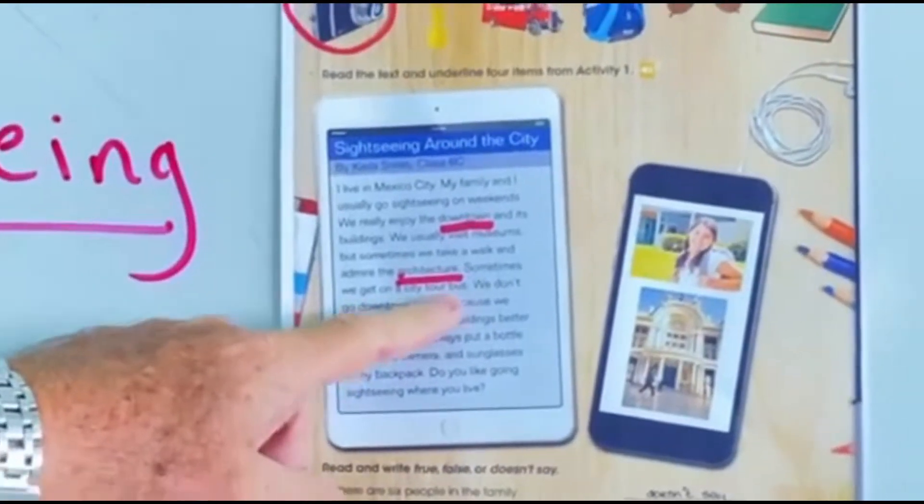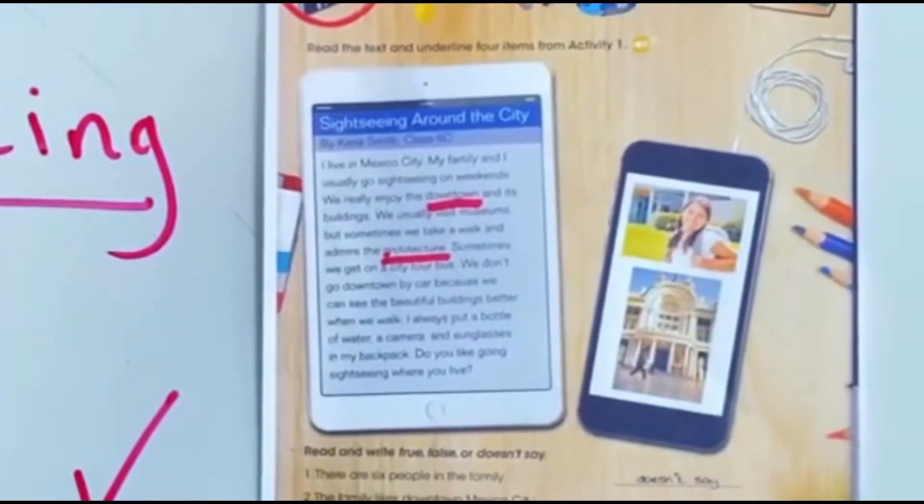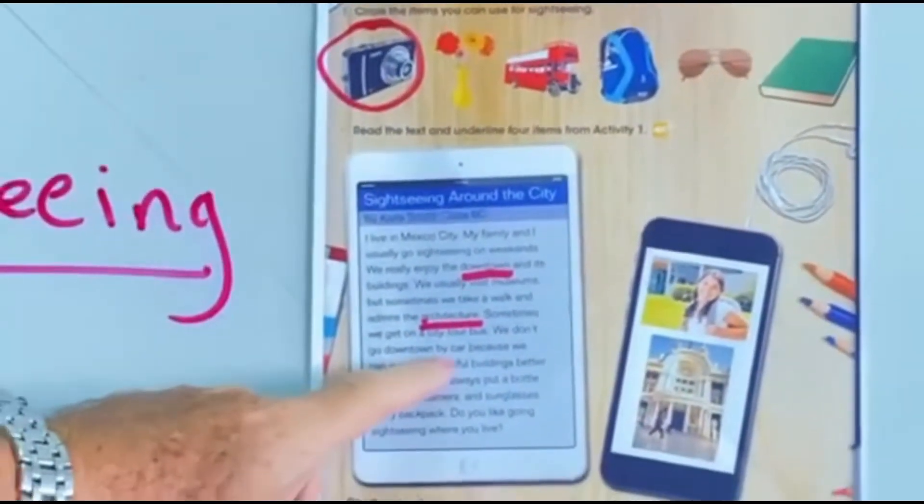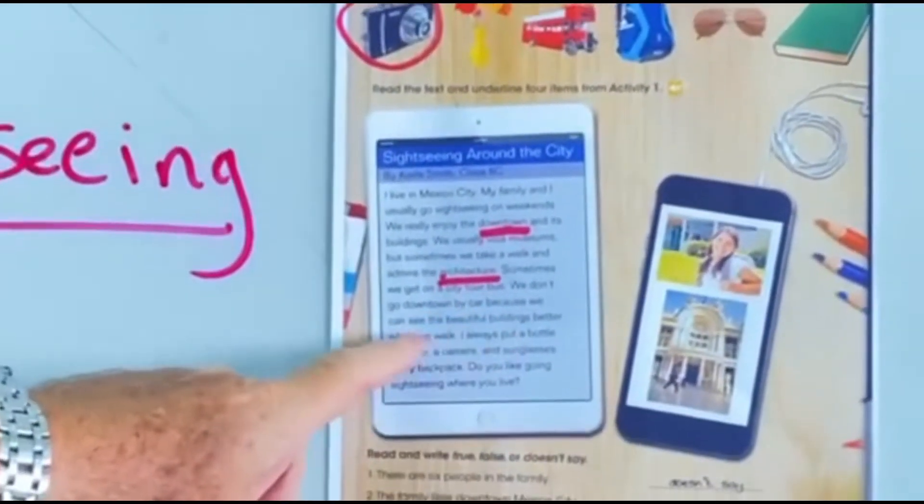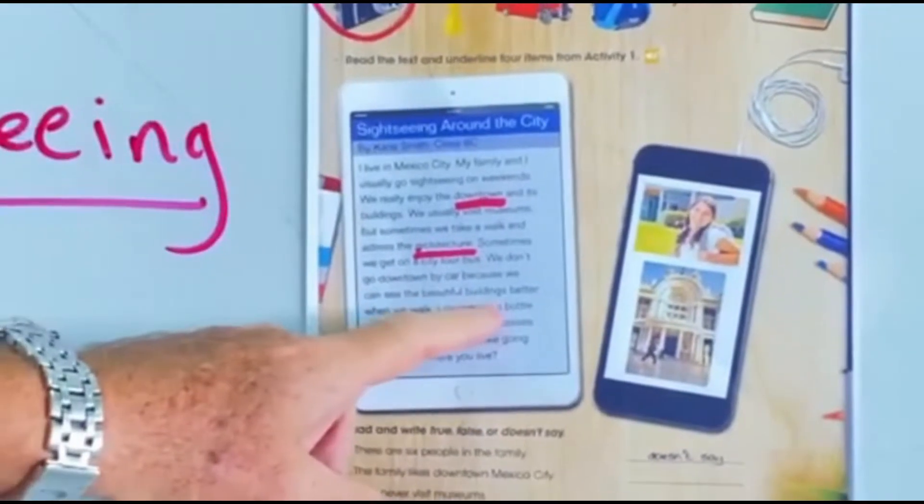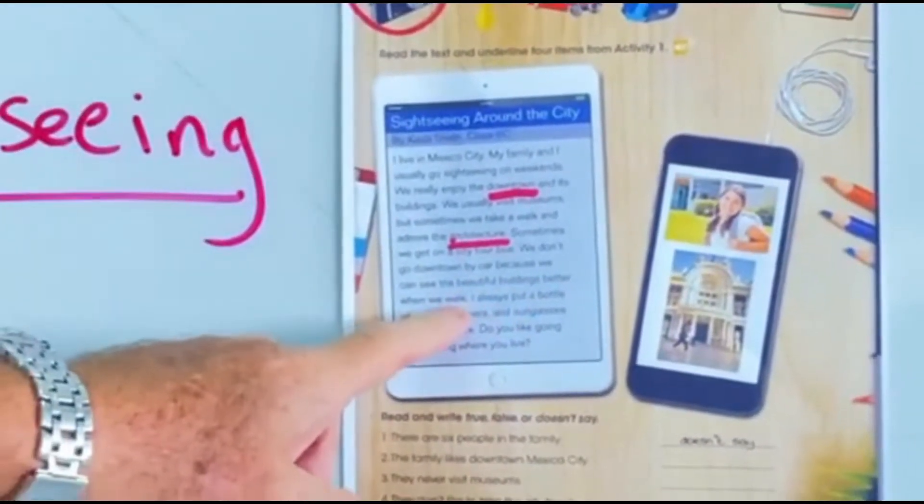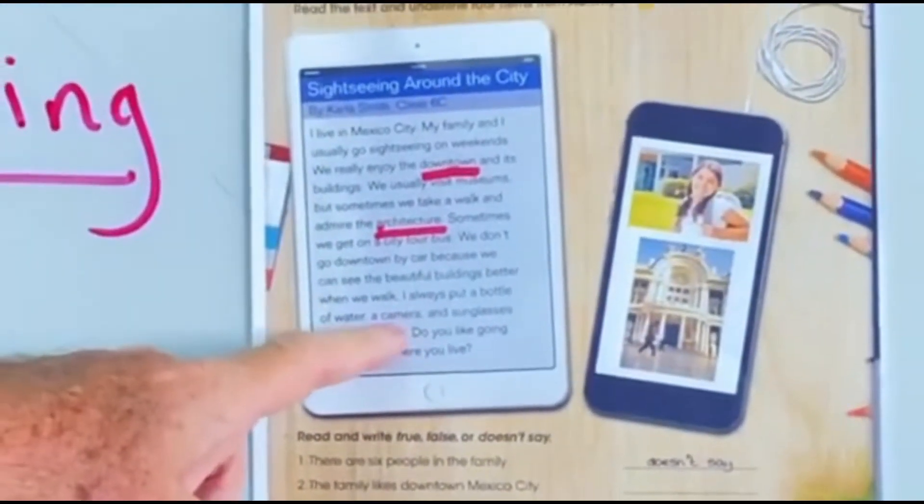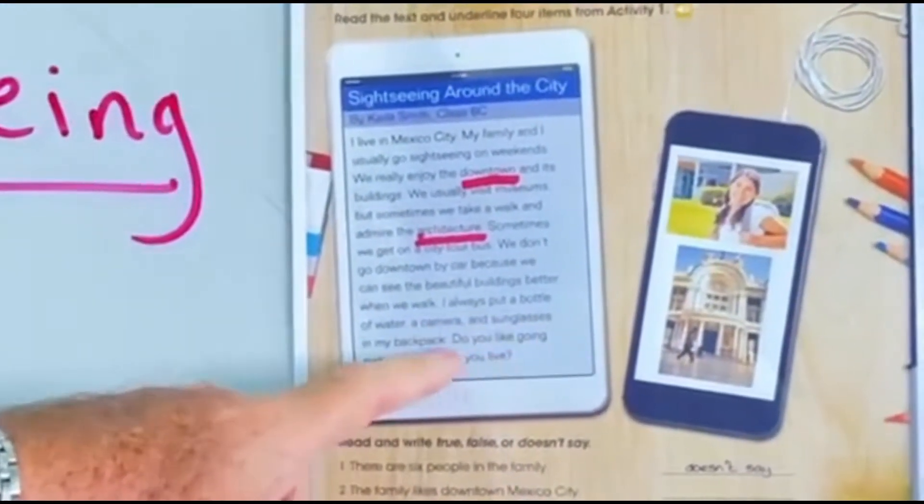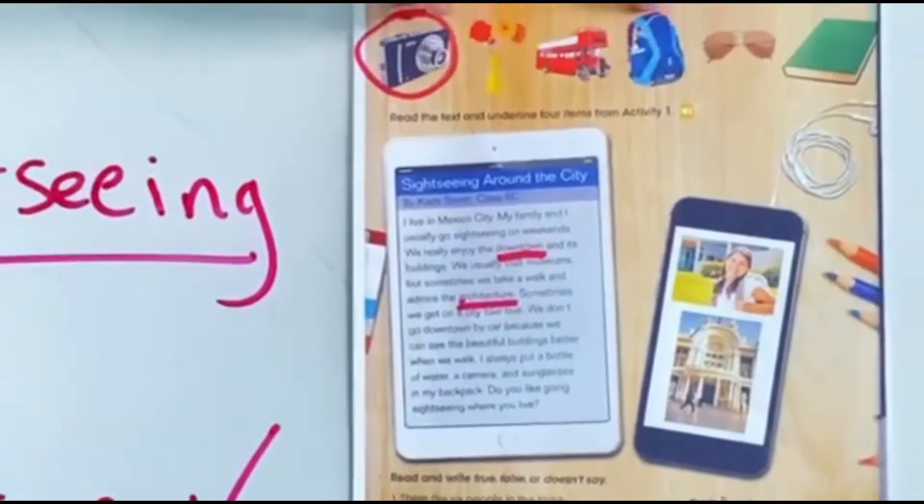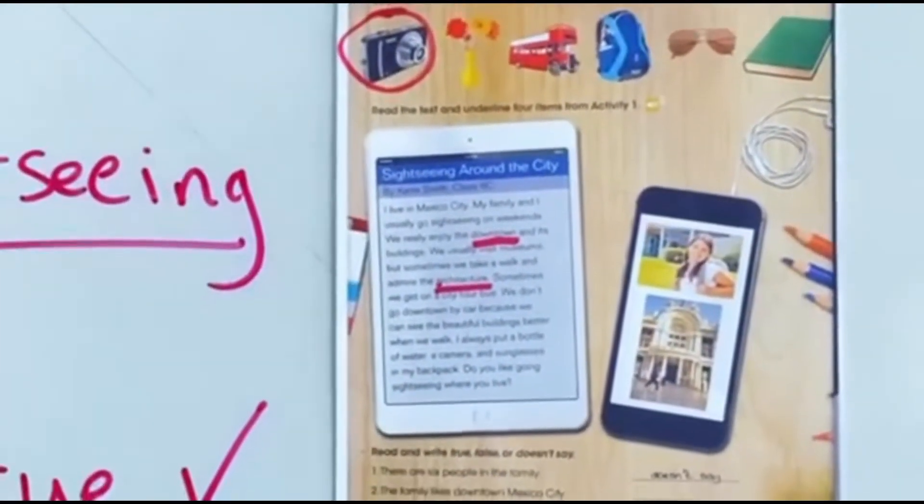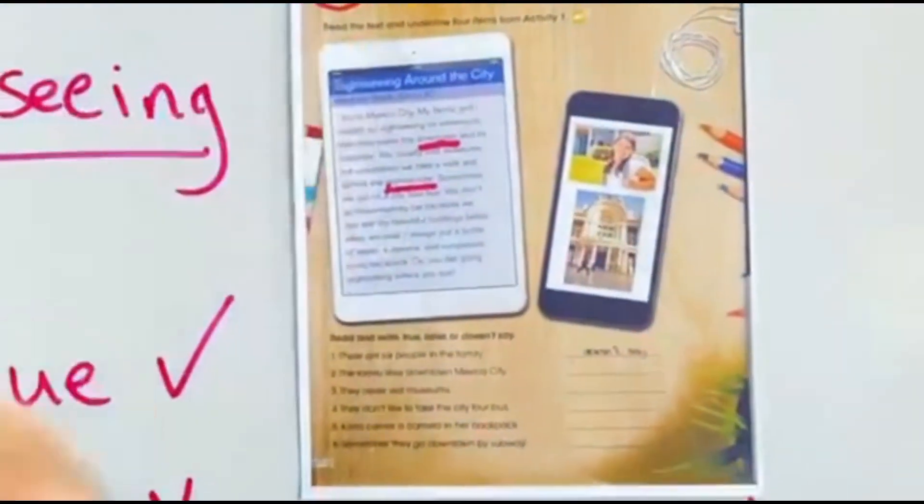Sometimes we get on a city tour bus. There we are, tour bus around the city. We don't go downtown by car because we can see the beautiful buildings better when we walk. I always put a bottle of water, a camera and sunglasses in my backpack. Do you like going sightseeing where you live? Okay, so that's what she says in her text message.